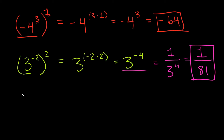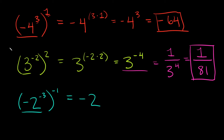Now let's make everything negative. If we have negative two to the negative three, and that whole thing raised to the negative one — just follow the steps. Negative two is our base, and we multiply the exponents: negative three times negative one equals positive three. So we have negative two cubed, which is negative two times negative two times negative two, equal to negative eight.